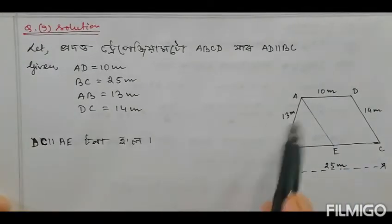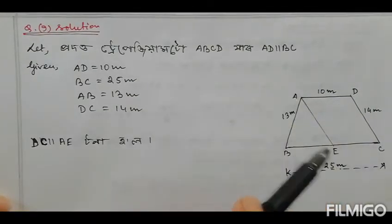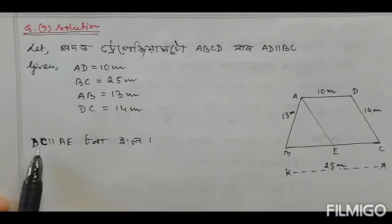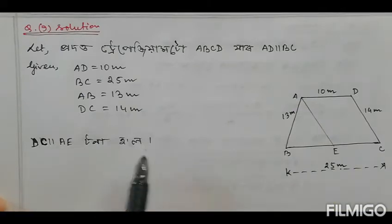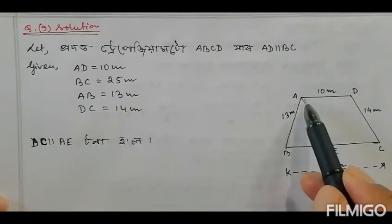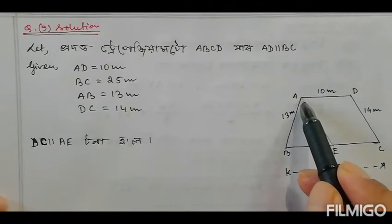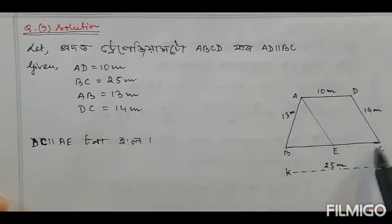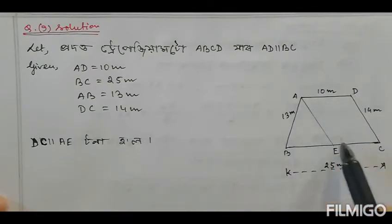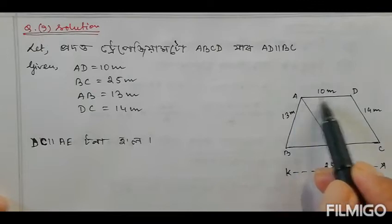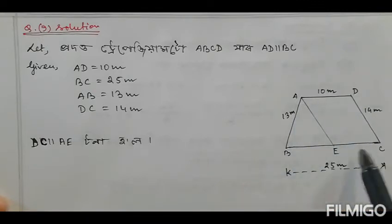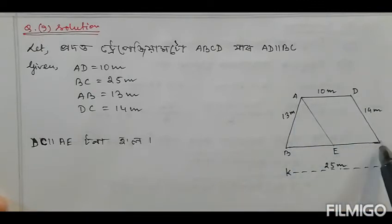So students, I will take point A, E, and R. I will draw construction lines from A and D. BC is 25m, and E is a point such that BE is a certain length.